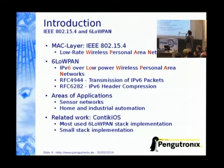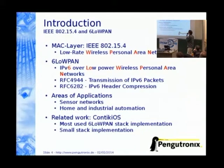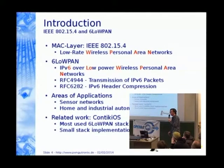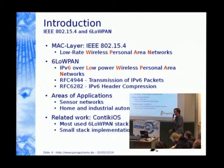The MAC layer is IEEE.4, which stands for Low-Rate Wireless Personal Area Network. On top of the IEEE.4, we run 6LoWPAN — IPv6 over Low-Power Wireless Personal Area Networks. There are mainly two RFCs: the first one describes the transmission of IPv6 packets over IEEE.4 networks, and the second one describes the IPv6 header compression format. The areas of application are sensor networks and home and industrial automation.